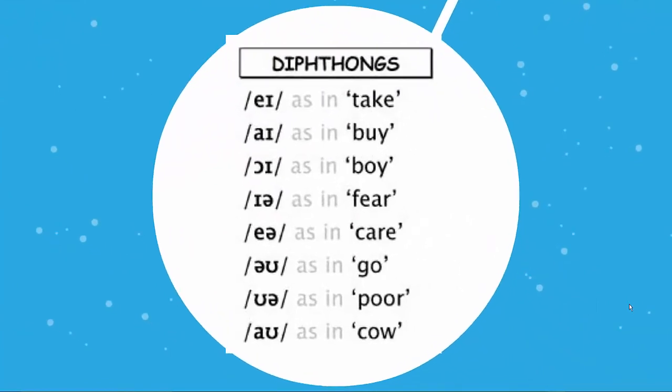We have also seen together diphthongs. Diphthongs are vowels where you have two vowel sounds that come together. So when you say a diphthong, normally your mouth will move: eɪ as in take, aɪ as in buy, ɔɪ as in boy, ɪə as in fear, eə as in care, əʊ as in go, ʊə as in poor, aʊ as in cow.